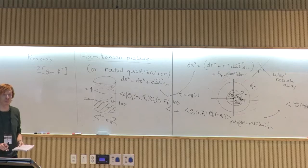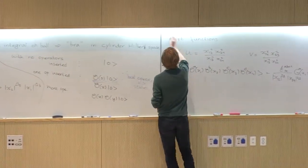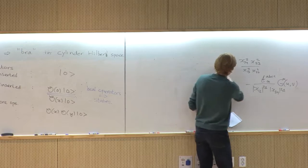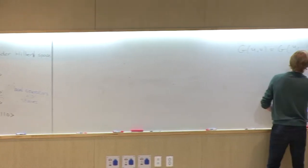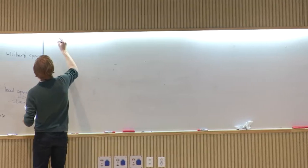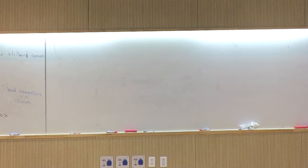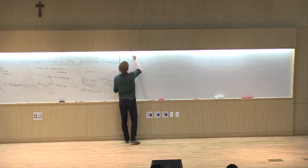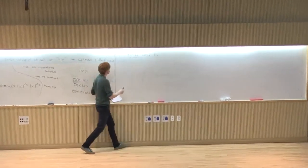To understand what happens with the point at infinity, we need to discuss finite conformal transformations of flat space. So let's have a geometrical interlude on finite conformal transformations. The aim is to demystify the point at infinity and understand the special conformal transformations a bit better.